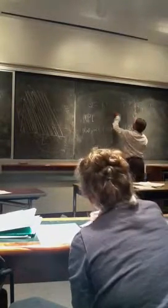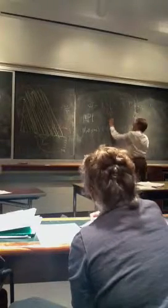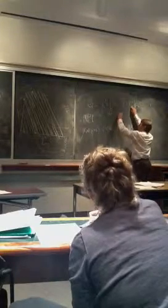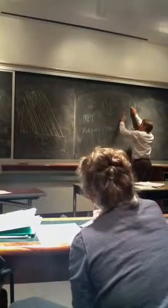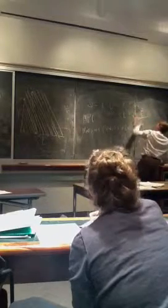Holding capital constant at 100, the function becomes 10L to the 1 half, the square root of 100, and then you take the derivative of that and you get 5L to the minus 1 half, which is just equal to 5 divided by L to the 1 half.